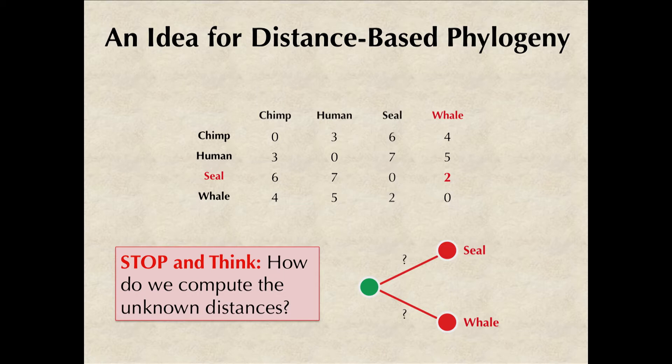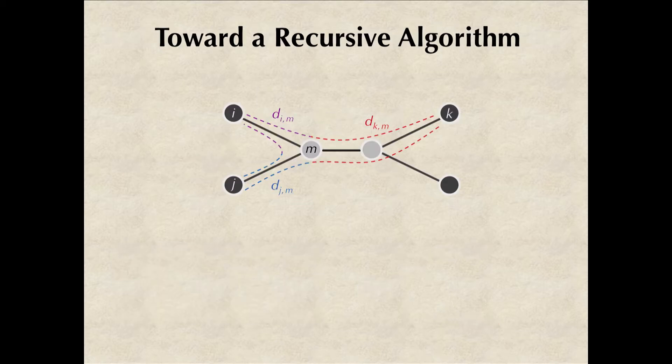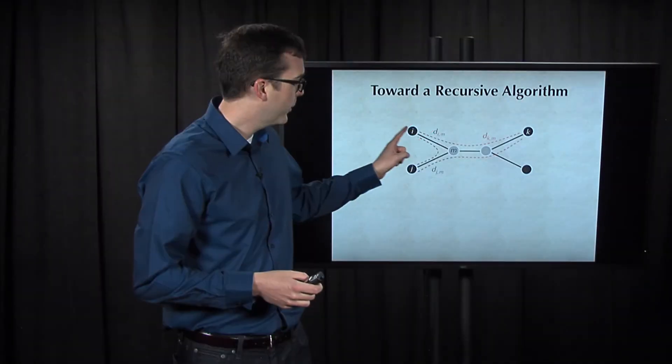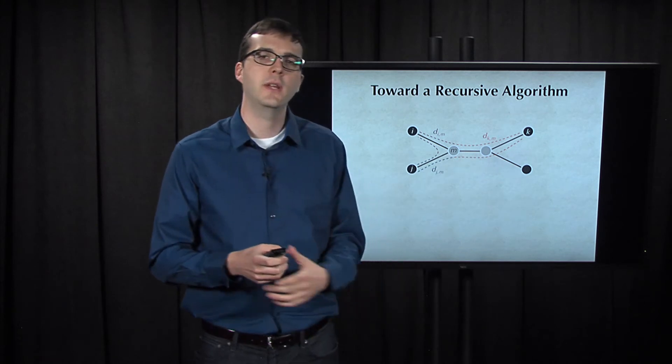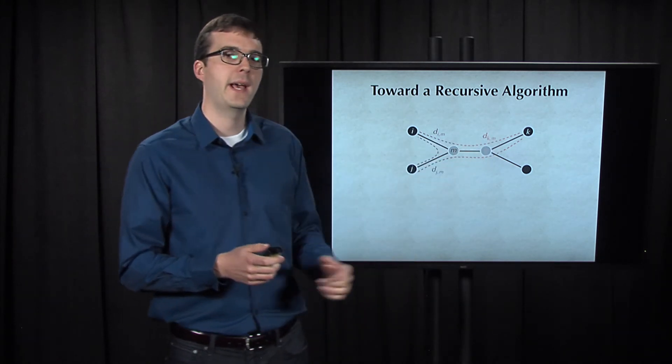So why don't we take a step back and think about a tree with neighboring leaves i and j that share a parent m. We're essentially trying to reconstruct the blue and purple distances. But if k is some other leaf in the tree, we're going to see that the red distance will help us out.